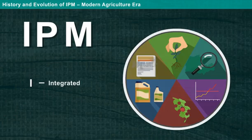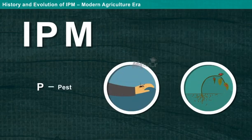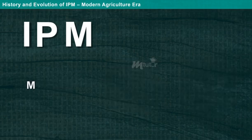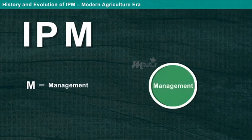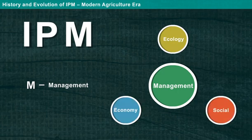I stands for integrated, that is, harmonious use of multiple methods to control the impact of single pest as well as multiple pests. P stands for pest — any organism that is harmful to humans and crops, including weed or pathogens. And M stands for management, which refers to a set of decisions or rules based on ecological principles, economic and social consideration.